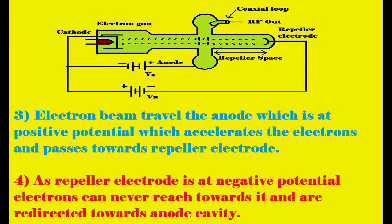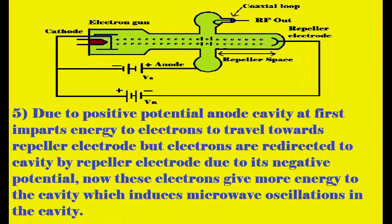The repeller electrode is connected to the negative terminal of the battery source. Due to this negative potential, electrons can never reach the repeller — they are reflected back to the cavity. The anode cavity at positive potential had accelerated the electrons, giving them energy to travel toward the repeller, and the negative repeller reflects them back.